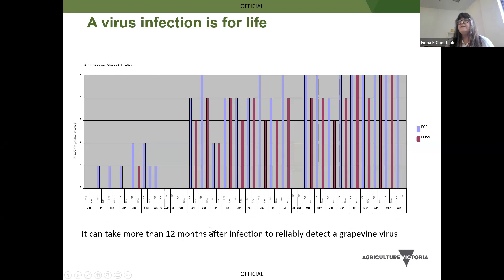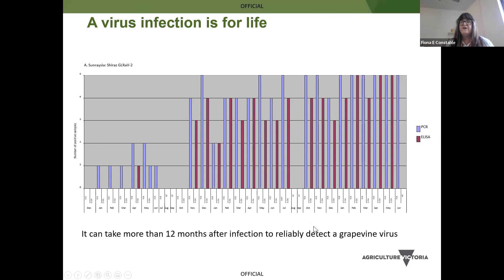Some work we did a few years ago showed what detection looks like after inoculation. We grafted infected material onto grapevines — this was for leaf roll 2 on Shiraz. We got a little bit of detection in the first 12 months; it was very difficult to detect the virus — only one out of five grapevines we inoculated could be detected. But then the following year detection improved and continued to improve. It really demonstrates how long it can take to reliably detect and find a virus after an infection event.